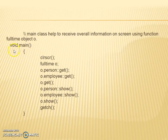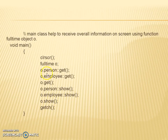Now we are in the main function. Using a FullTime object o, we are accessing all the information of the employee as well as person. Here get method, person show method, employee show method, and show method will display the information regarding person and employee, including id, salary, and working hours of that employee. This is how we can do multilevel inheritance — deriving one class from a base class, and then deriving one more class from that derived class. It is called multilevel inheritance.